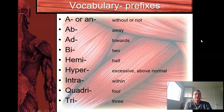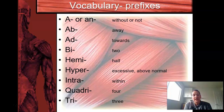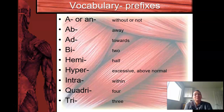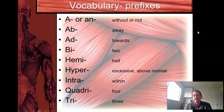Vocabulary for the prefixes. If you see A or AN before a word, it usually means without or not. AB means to take away — when you abduct something, you're taking it away. ADD means adding or towards. BI means two. HEMI is half. HYPER is excessive or above normal. INTRA is within. QUADRA is four. TRI is three. Stop here if you need to fill in the rest of those words.